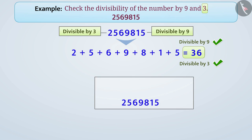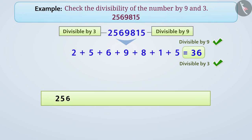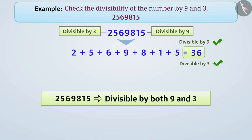Now, by dividing the number 25,69,815 by 3, verify yourself that the number is divisible by 3. In this way, in this example, number 25,69,815 is divisible by both 9 and 3.